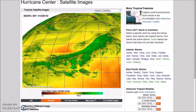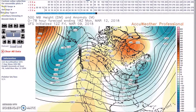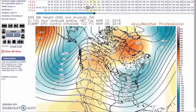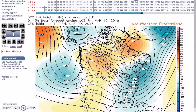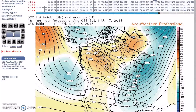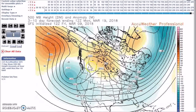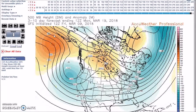Now looking at the period for March 15th to the 19th — during this period the pattern kind of shifts eastward. The upper low and trough slide into the west, we still have our trough here, and we still have positive height anomalies near Greenland.